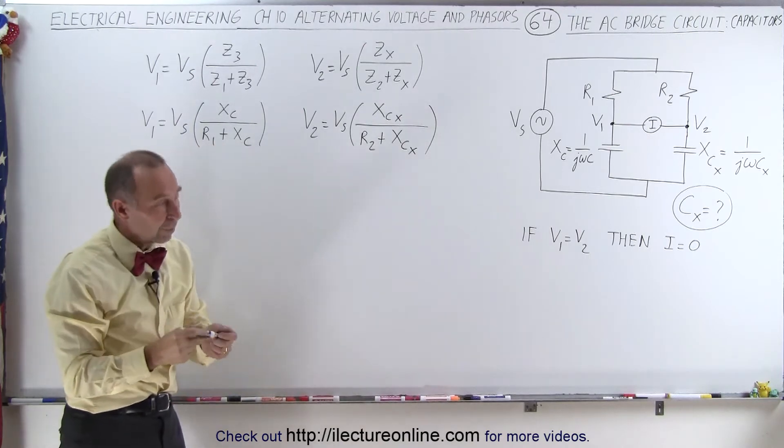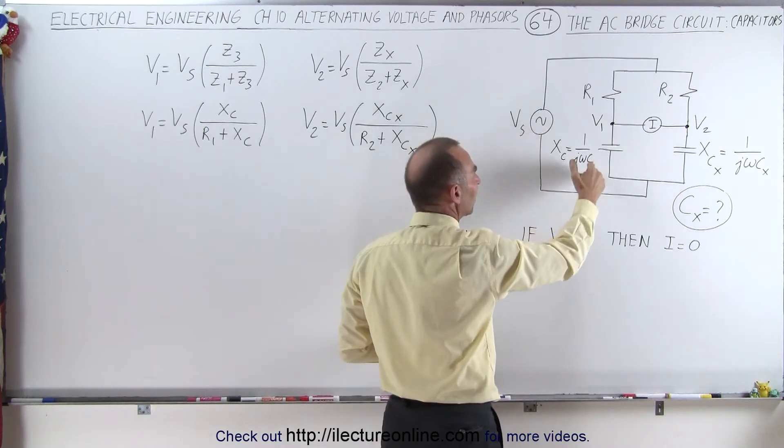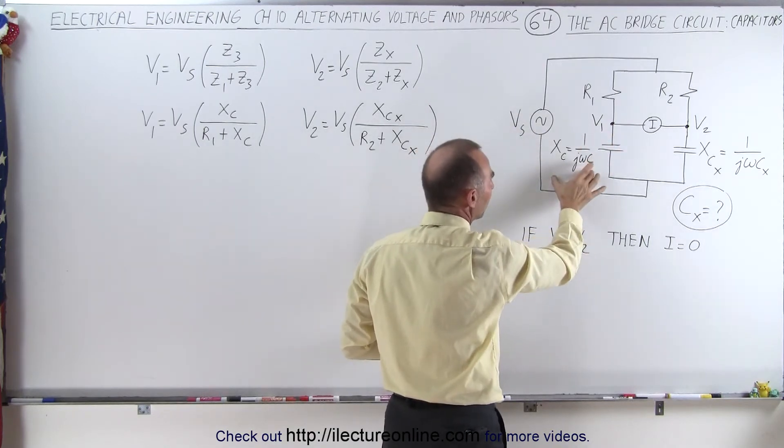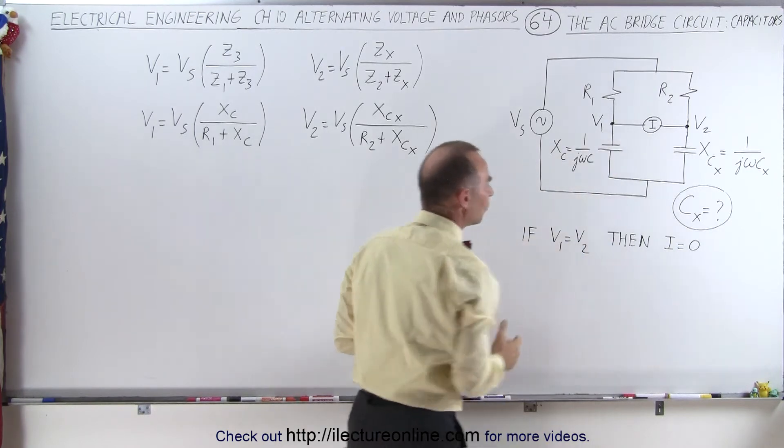Now we use the principle that if we adjust the X sub c, the known capacitor, and the frequency and everything, and the R, the resistance, appropriately, that we get the current here to go to zero. That's when V1 equals V2.